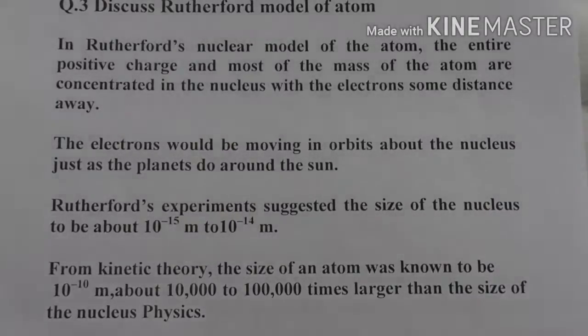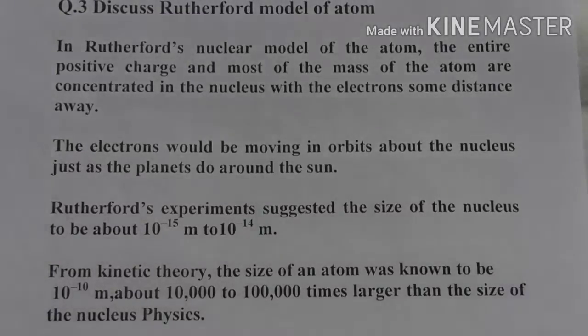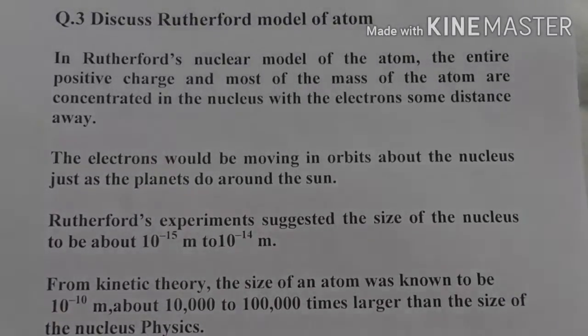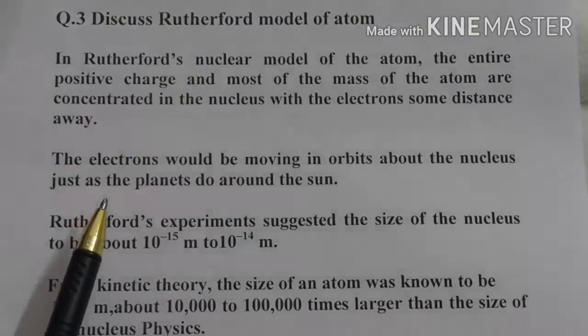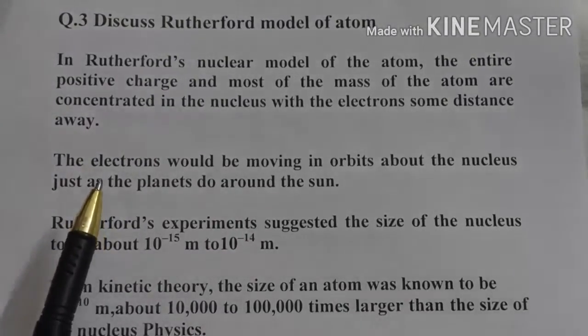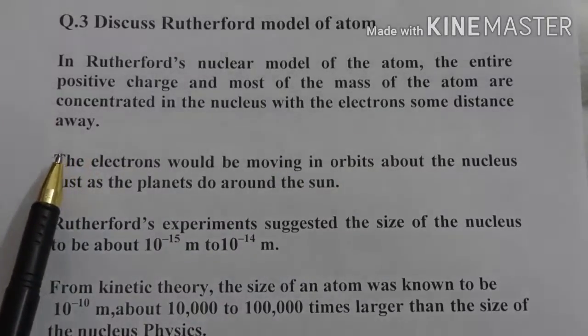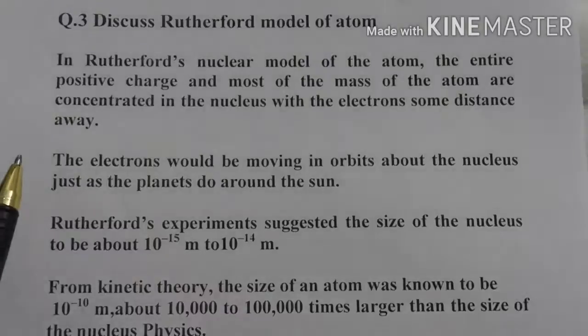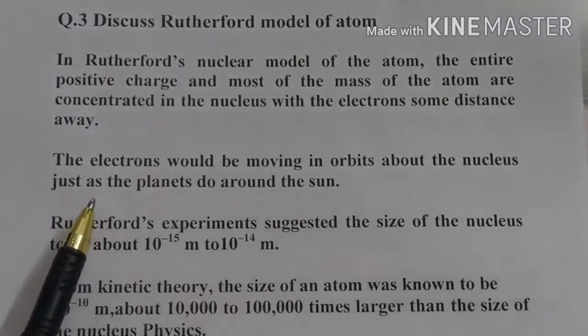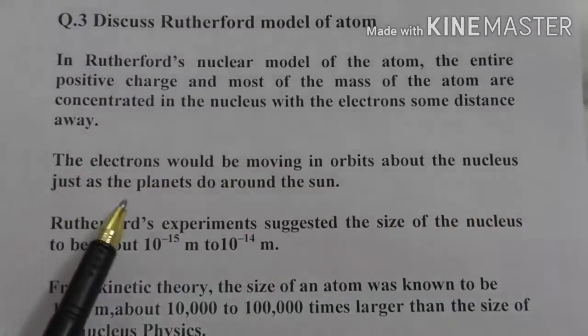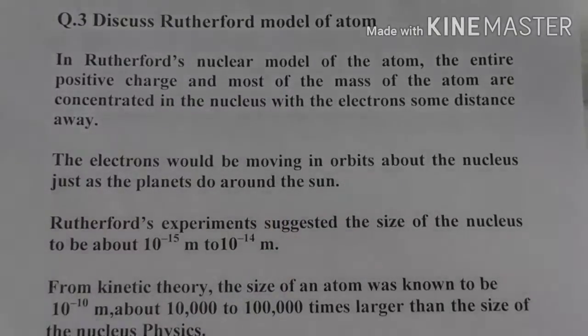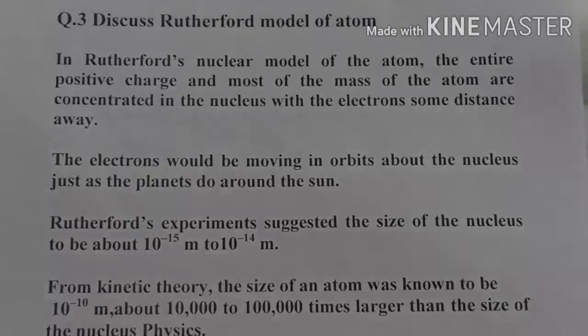With this you can discuss the Rutherford model of atom. After understanding the experiment and interpreting its results, you can reach this conclusion: positive charge and mass of the atom are concentrated in a very small region called nucleus, and electrons are some distance away from the nucleus. Electrons are moving in orbits about the nucleus just as planets do around the sun.